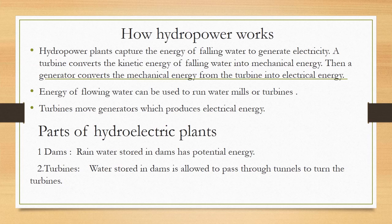Hydropower plants capture the energy of falling water to generate electricity — the same principle used in dams. A turbine converts the kinetic energy of falling water into mechanical energy. Then a generator converts the mechanical energy from the turbine into electrical energy, which is stored and carried to industries or houses through wires. Energy of flowing water can be used to run water mills or turbines, and turbines move generators which produce electrical energy.